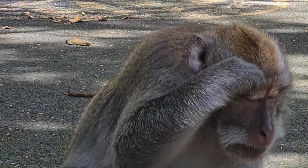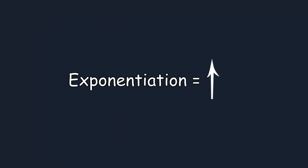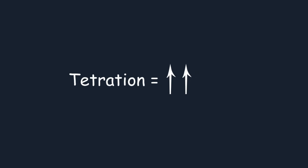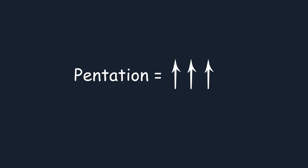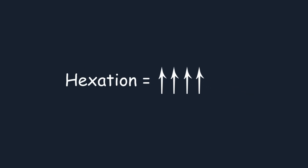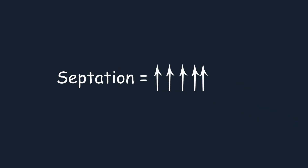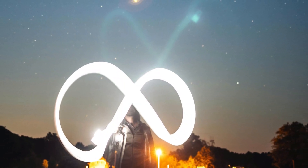Imagine then something could exist beyond this — and yes, exactly. Exponentiation equals one up arrow. Tetration equals two up arrows. After it comes pentation, which is repetition of tetration. Then comes hexation, which is repetition of pentation. Then comes septation, which is repetition of hexation. And octation, which is repetition of septation. And so on, going on to infinity and beyond. All of these are called hyperoperations.